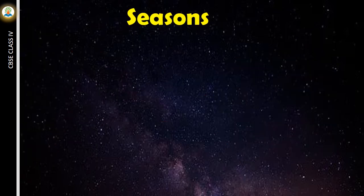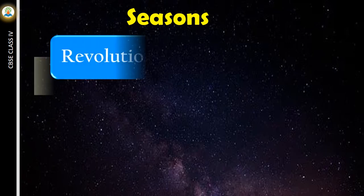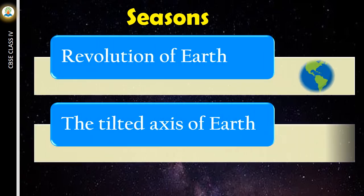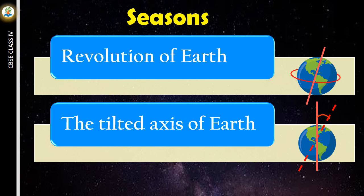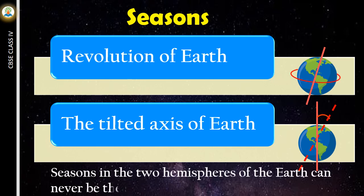Two main factors that result in the change of seasons on Earth are revolution of Earth and the tilted axis of Earth. Seasons in the two hemispheres of the Earth can never be the same.